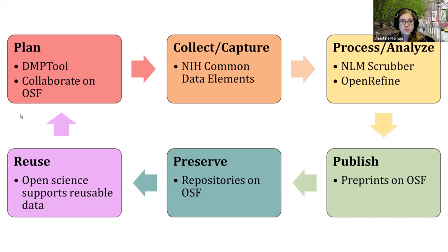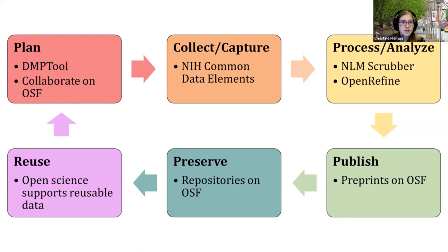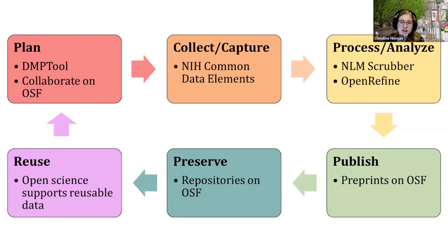To start, we'll be talking about the DMP tool, which is most useful at the planning stage. We'll next talk about the NIH Common Data Elements, which can help with standardizing data at the collection and capture stage. We'll touch on OpenRefine and the NLM Scrubber, which are cleaning and anonymization tools used in the process and analysis stage. And finally, we have the Open Science Framework — OSF has applications for every step of the research life cycle, but today we'll focus on how it helps with publishing, preserving, and potentially reusing data.